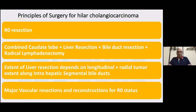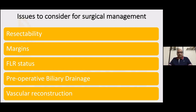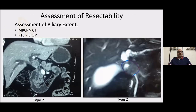At times, one has to undertake major vascular resections and reconstructions to achieve an R0 status. The key issues in surgical management are: should I and can I get the tumor out? Can I get a negative margin? What is the status of the future liver remnant — is it adequate, do I need to augment it? Do I need preoperative biliary drainage prior to resection? And is any vascular reconstruction needed?